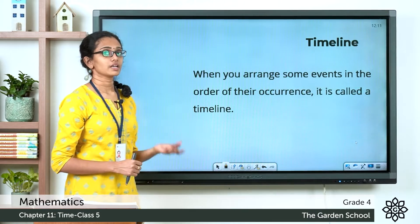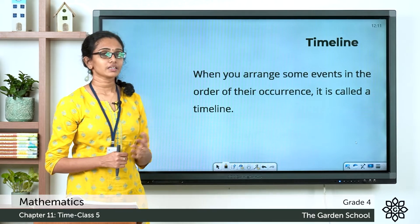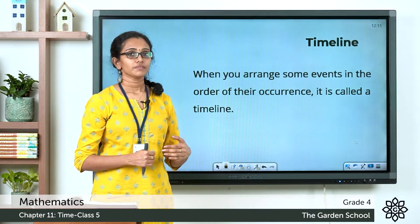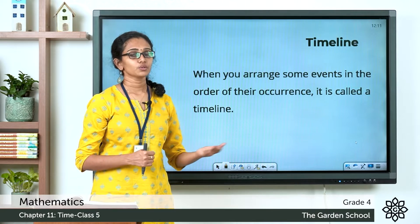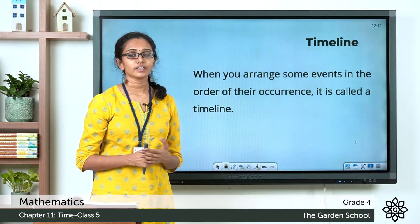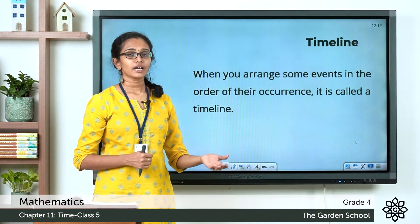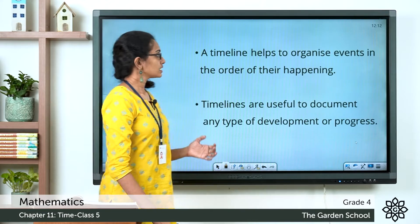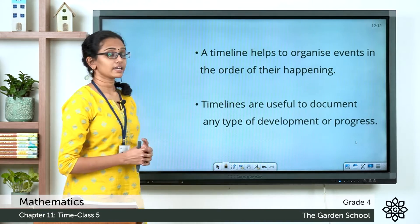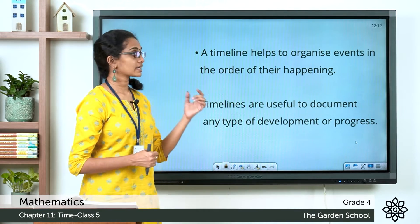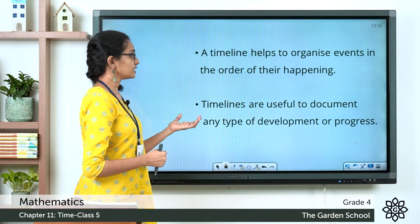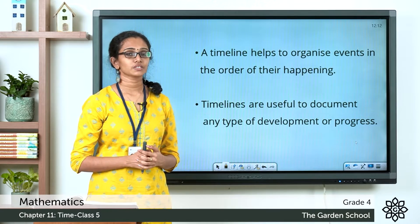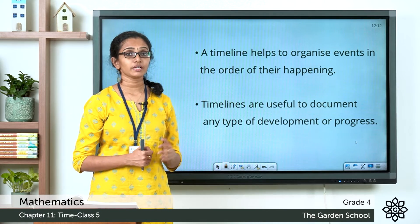Now we'll talk about a timeline. You might have heard the word timeline before. When you arrange a few events in the order of their occurrence, you call that a timeline. These timelines help us to organize events in the order of their happening, and they are useful to document any type of development or progress in a project.